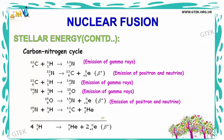Now let us look into the carbon-nitrogen cycle of stellar energy. Here there is emission of gamma rays, emission of positrons and neutrinos, and emission of further positrons and neutrinos. The reaction between carbon and hydrogen provides nitrogen. Again this undergoes a reverse reaction with the emission of positrons and neutrinos. Finally, the process of nuclear fusion occurs continuously to generate the carbon-nitrogen cycle continuously.